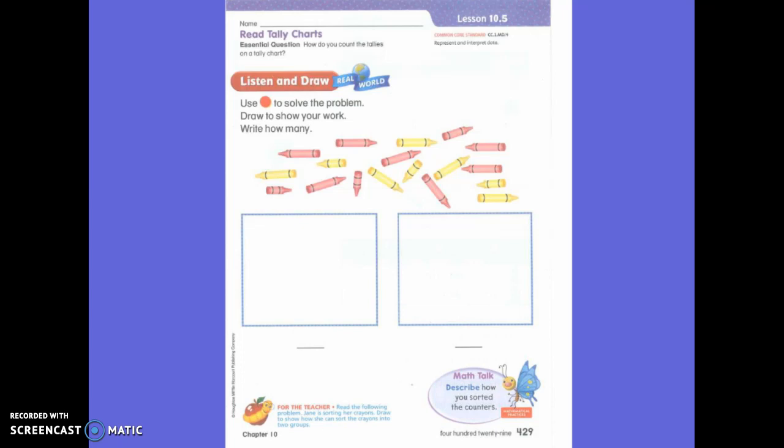How is one way she can sort her crayons? She can put the red on one side and the yellow on the other side. You're absolutely right. She can put her red crayons on one side and she can put her yellow crayons in the other box. Yeah, that is exactly right.